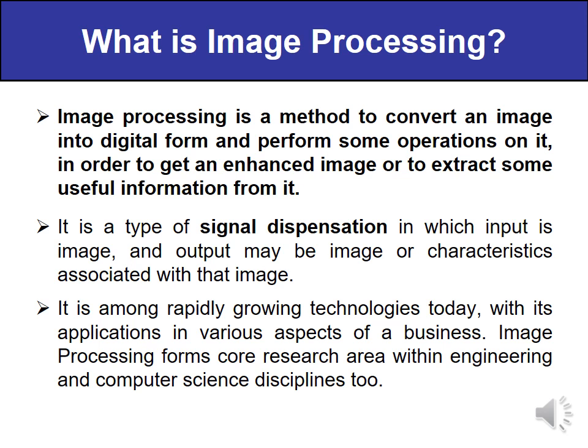What is image processing? Image processing is a method of converting an image into digital form and performing certain operations on it, so that we may get an enhanced image at the output or be able to extract some useful information from it. Image processing is a type of signal processing where the input is an image, while the output may be an image or the characteristics and attributes of that image. It is a rapidly growing technology with applications in almost all areas of engineering and computer science.